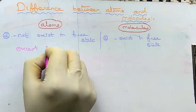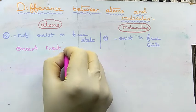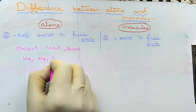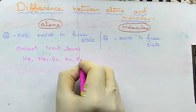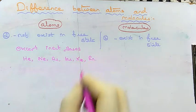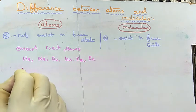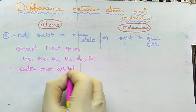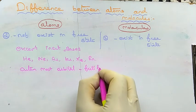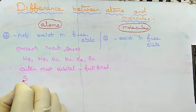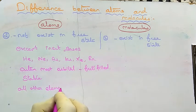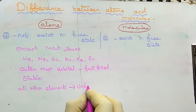All elements except inert gases — helium, neon, argon, krypton, xenon, and radon — will not be present in a free state. The outermost orbitals of inert gases are fully filled with electrons, so they are in a stable state. All other elements have vacant outermost orbitals, making them unstable.